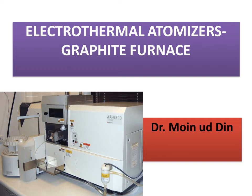Hello dear students, I am Dr. Moenuddin. In this video we are going to discuss electrothermal atomizers, which are also known as graphite furnace. These are sources of atomization. Whenever we discuss atomic spectroscopy, the first step common to all types is atomization. For that we use different atomizers like inductively coupled plasma, flame, direct current plasma, electric spark or arc sources, and electrothermal atomizers.